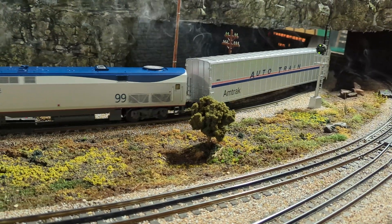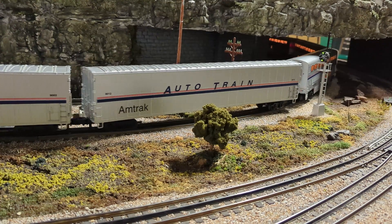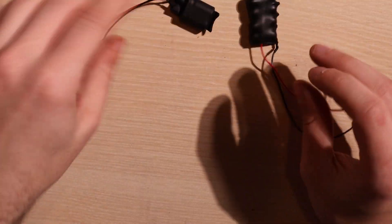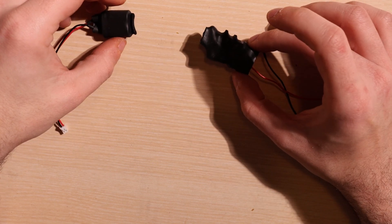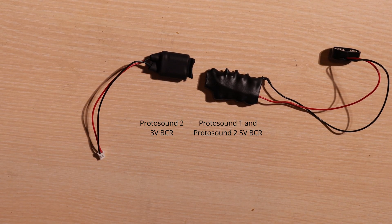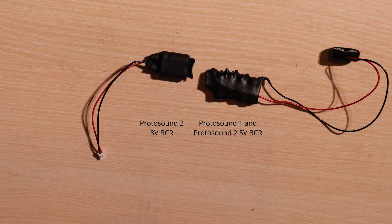This reliability tends to extend the performance of your Protosound 1 and Protosound 2 engines so you can enjoy them for many years. In this video, I will show you how to create both variations of BCR. The original BCR which is used for Protosound 1 and Protosound 2 5 volt engines and the second type of BCR which is used for your Protosound 2 3 volt engines. So let's get started.